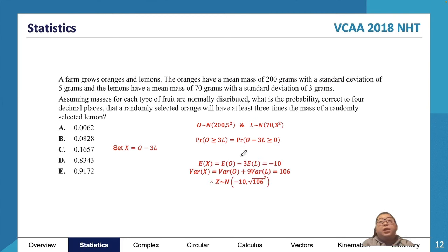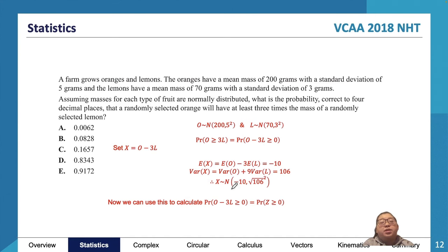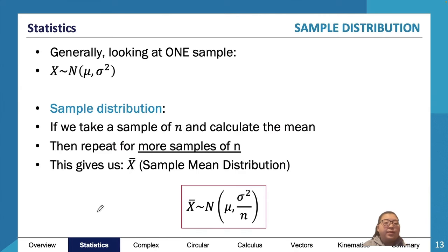E(X) = E(O) − 3·E(L) = 200 − 3(70) = −10. For Var(X): since it's −3L, we square the coefficient, giving Var(O) + 9·Var(L) = 25 + 9(9) = 25 + 81 = 106. So X ~ N(−10, 106). We want P(X > 0), which we calculate using normCDF, giving 0.1657 — option C.